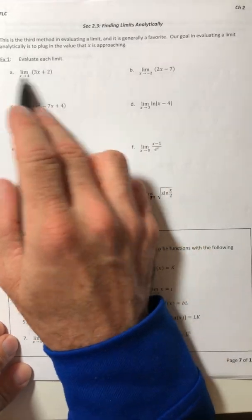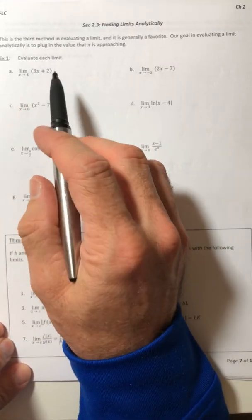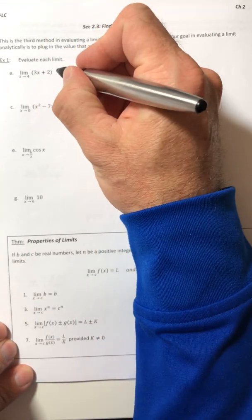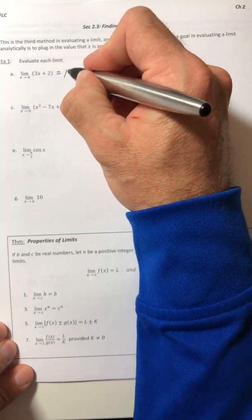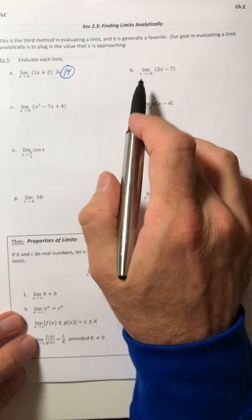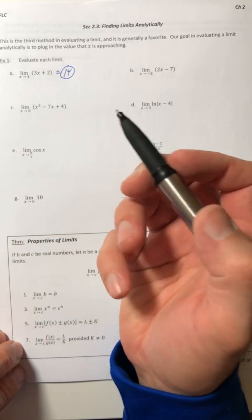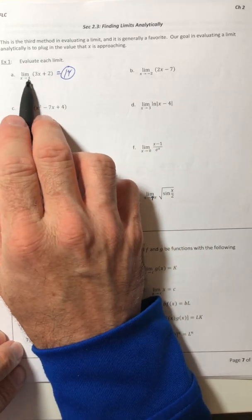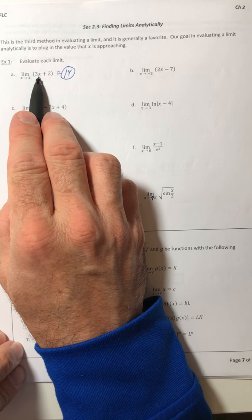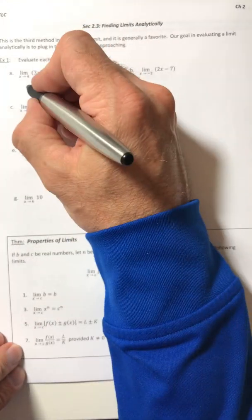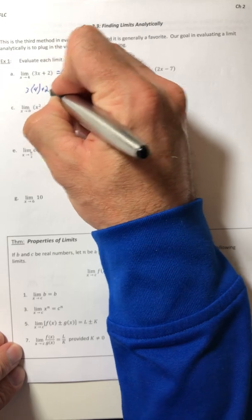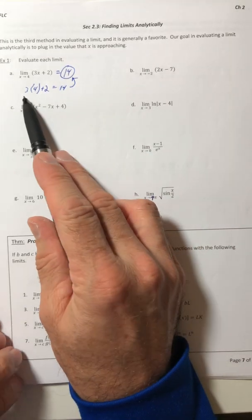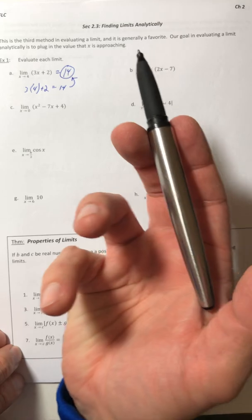So evaluate each limit. The limit as x approaches 4 of 3x plus 2 is just going to equal 14. Your goal for these types of limits is: if you can actually stick the value in for x, go ahead and stick it in and see what you get. So three times four plus two — that's 14. People like these a lot because they're pretty fast. If you plug in the number and get a value, that's it, you're done.